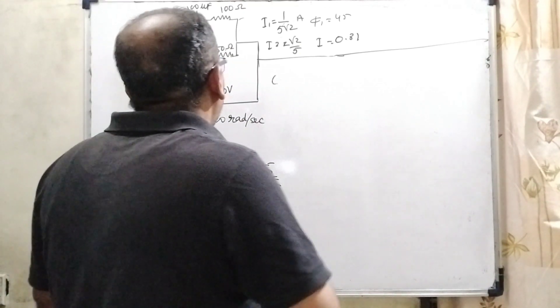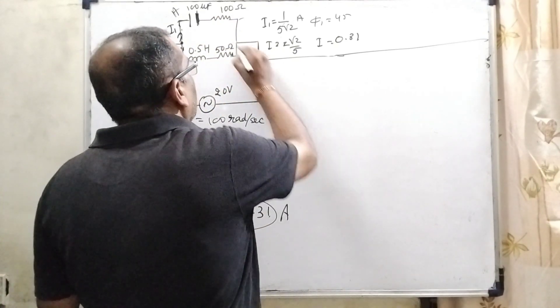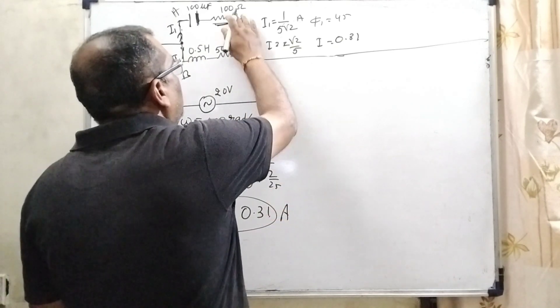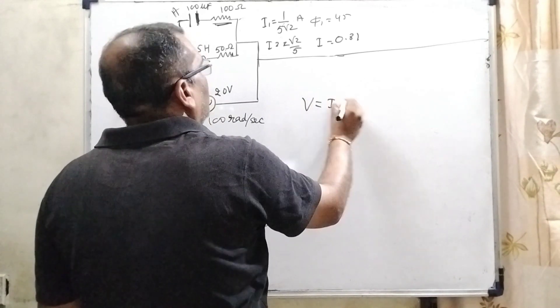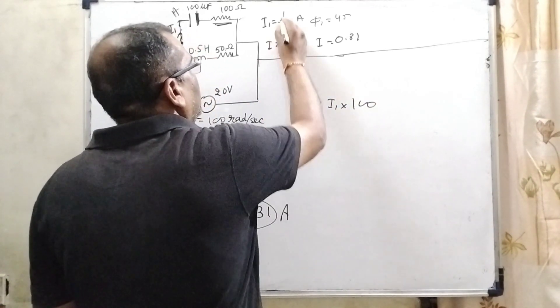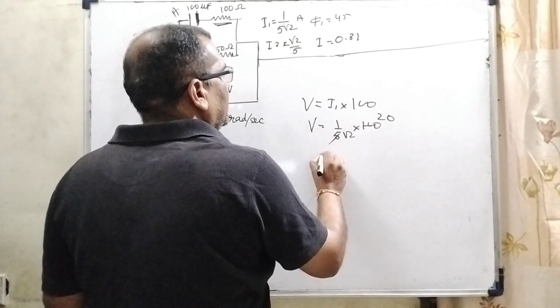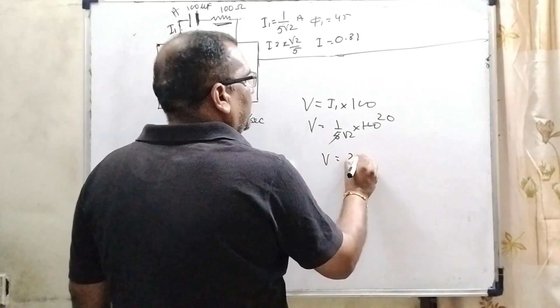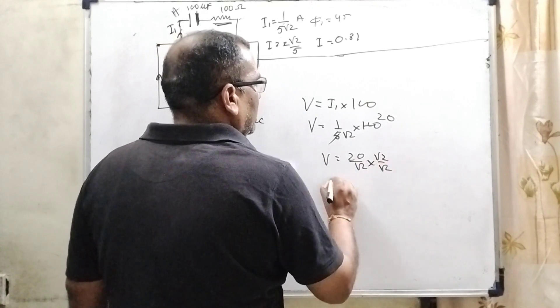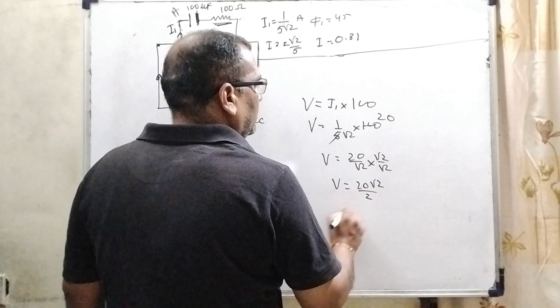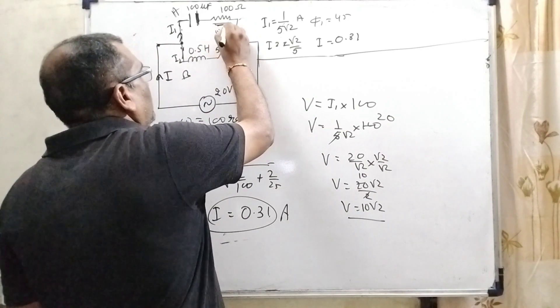So here the net current is 0.31 ampere. Now, next part we have to find out here the potential for 100 and for 50. So therefore here we have to find out the potential for the 100 ohm resistance. That is potential equal to I1 into 100. What is the value of I1? That is 1 by 5 root 2 into 100. Then that is 20 equal to 20 by root 2. If you want to be rationalized then it becomes 20 root 2 by 2, that is 10 root 2.